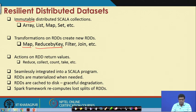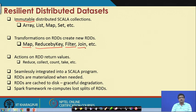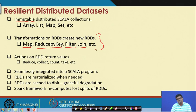We will see how to use reduce by key shortly. One can also have operations like filter, which operates on every record of an RDD, and join, which joins records in two different RDDs based on their keys. All transformations, when applied on one or more RDDs, create new RDDs — this is the property of a transformation.